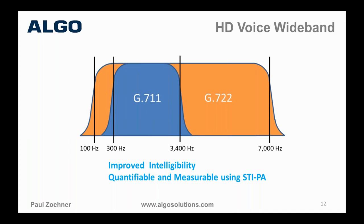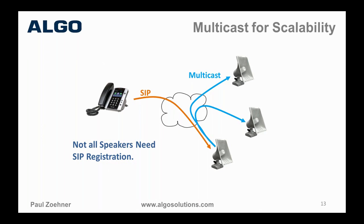This slide is a good representation of multicast scalability. A SIP call goes from a telephone to a horn speaker — there would be a SIP server somewhere, on-premise or in the cloud. When the horn speaker auto-answers on its SIP extension, it simultaneously generates a multicast over the network to additional speakers subscribed to that multicast IP address. You can have 10 or a thousand speakers and reach them all through a single SIP extension — reducing the need and cost of registering each speaker individually.